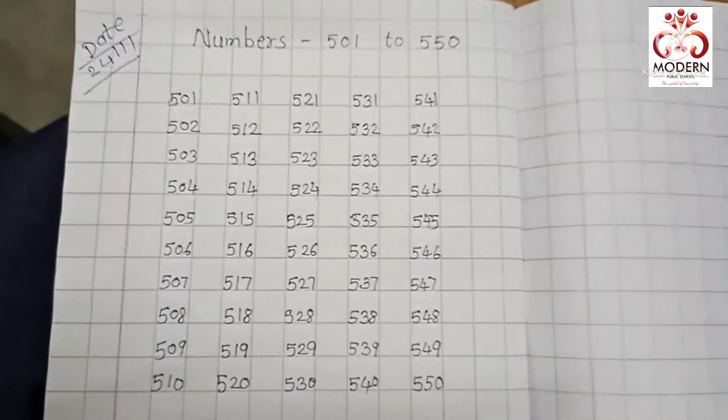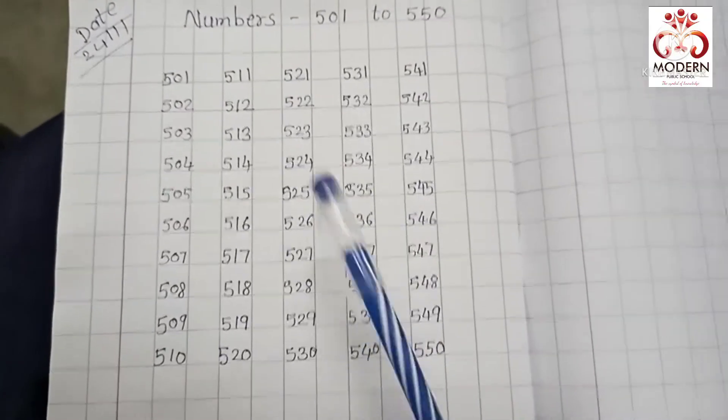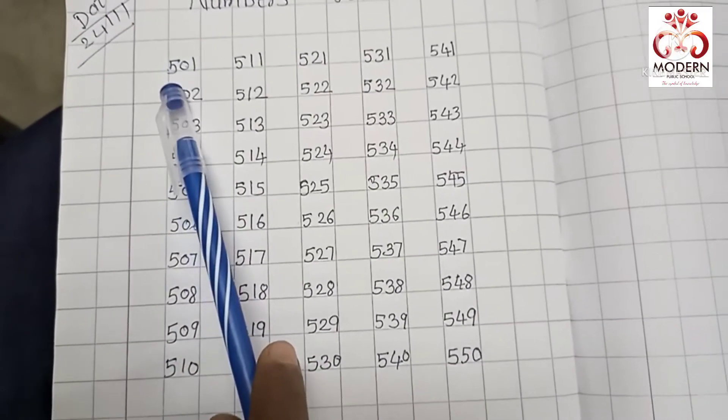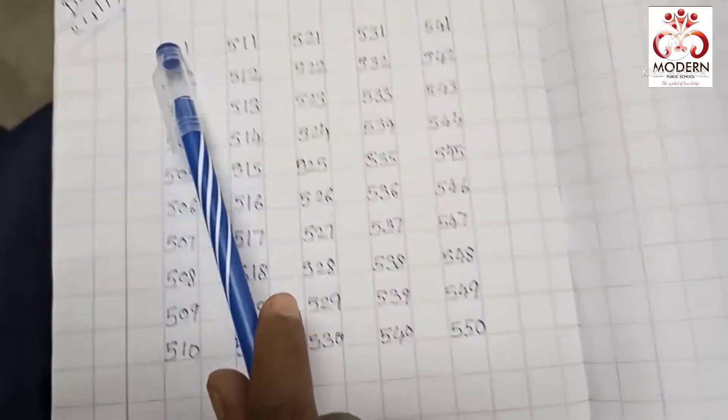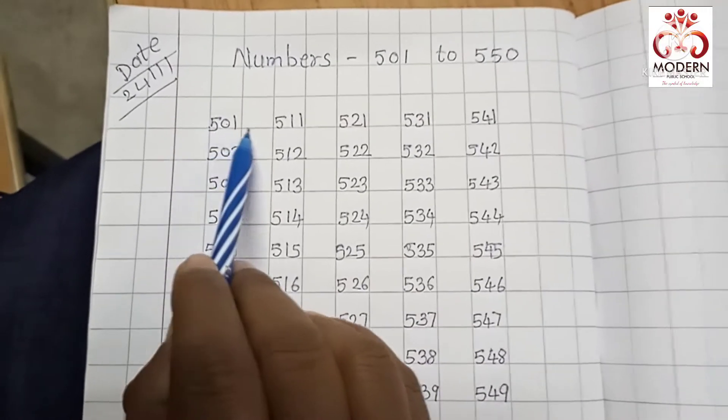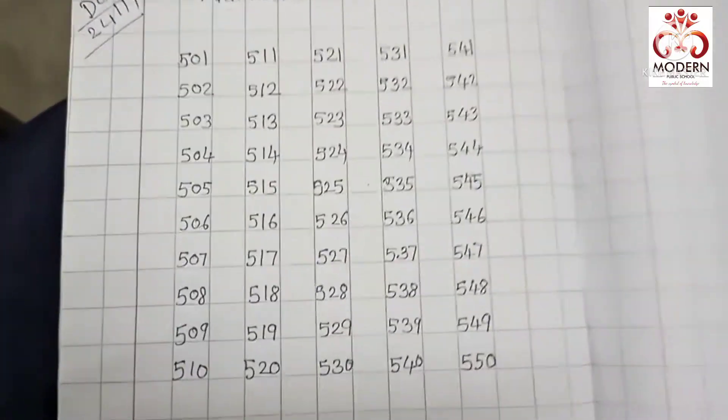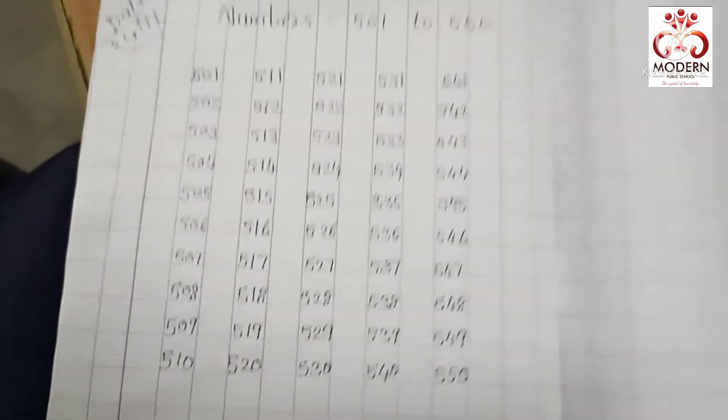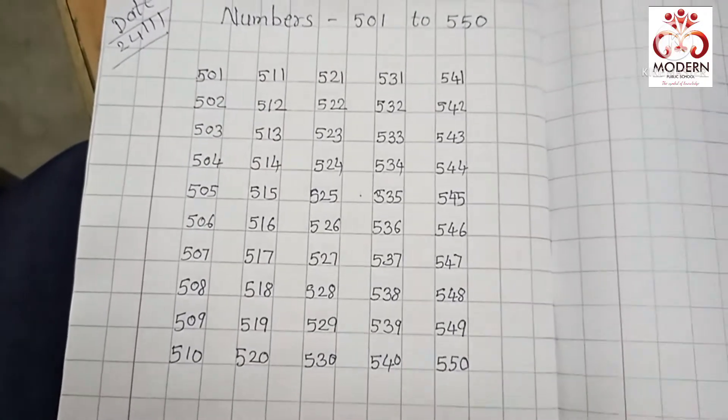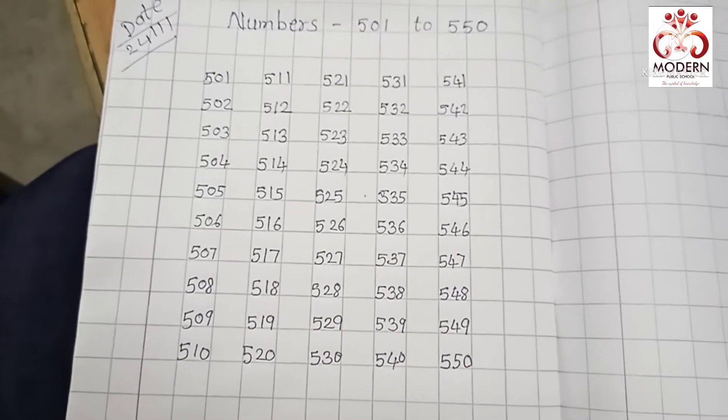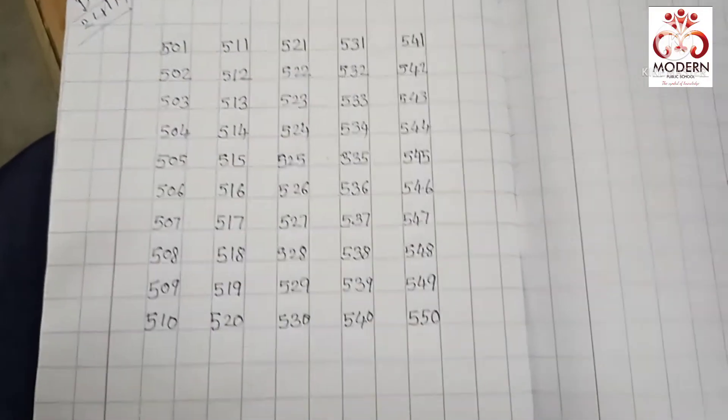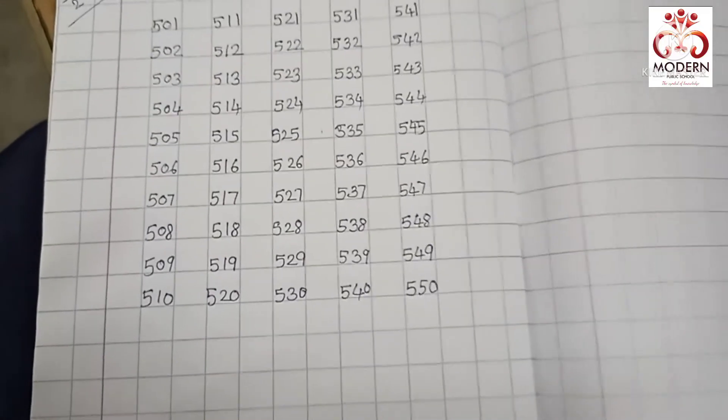So today's session is over. Just by writing, read properly and write this number proper in the box only. It looks very good. So read this number from 501 to 515. Remaining part means second part we will see in next session till then. Bye bye.